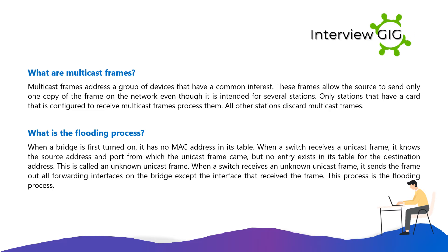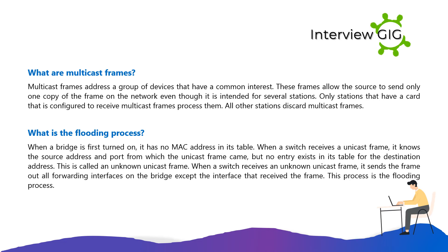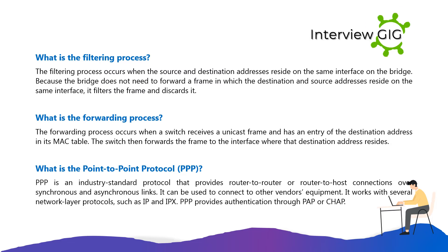What is the flooding process? When a bridge is first turned on, it has no MAC addresses in its table. When the switch receives a unicast frame, it knows the source address and port, but no entry exists for the destination address — this is called an unknown unicast frame. When the switch receives an unknown unicast frame, it sends the frame out all forwarding interfaces except the one that received it. This is the flooding process.